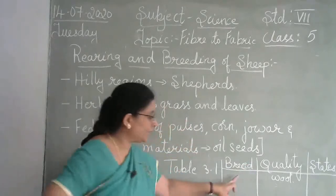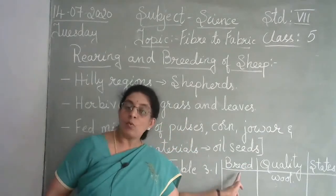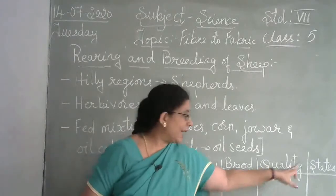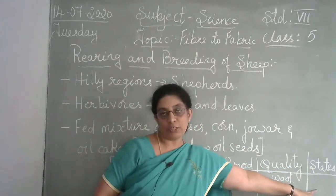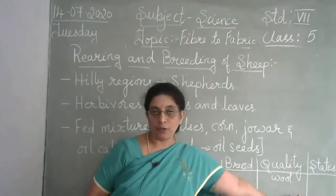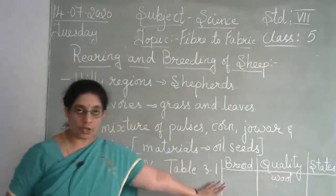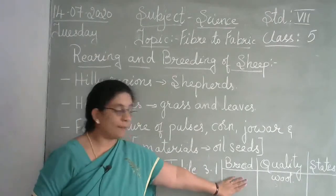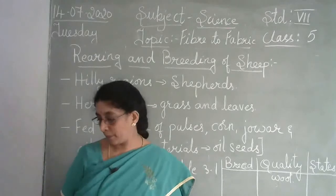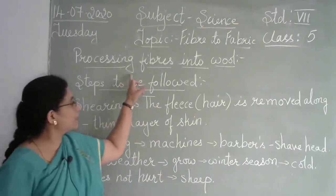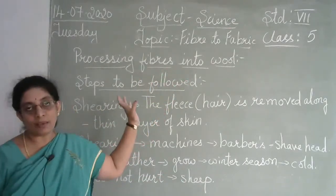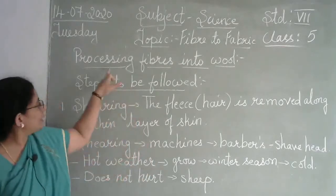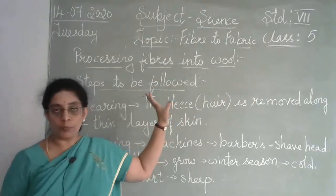Table 3.1 gives the breed — meaning the type of sheep — the quality of wool, and in which state the sheep are found. Take your textbook and refer to it for more information. Now we will see how wool is made — what steps are followed in processing fibers into wool.